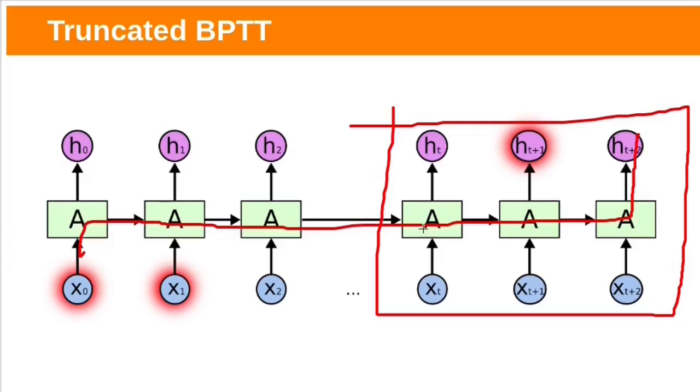But if we do so, there will be a problem of vanishing and exploding gradients. To model long term dependencies, we have special RNN architectures, LSTMs and GRUs, gated recurrent units. We will see them in next class.